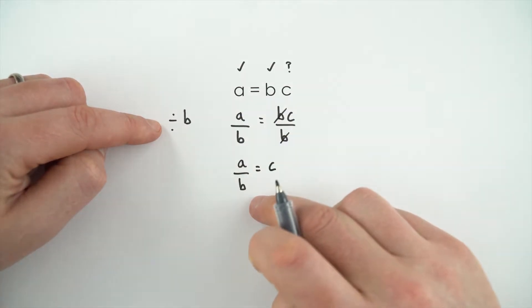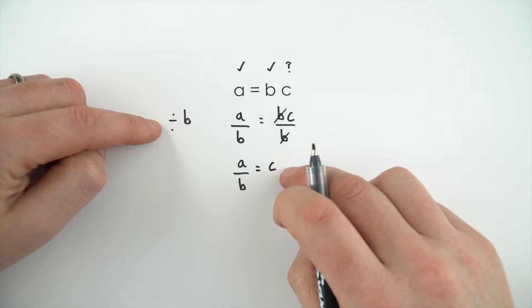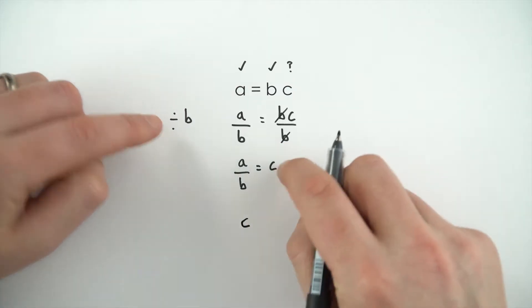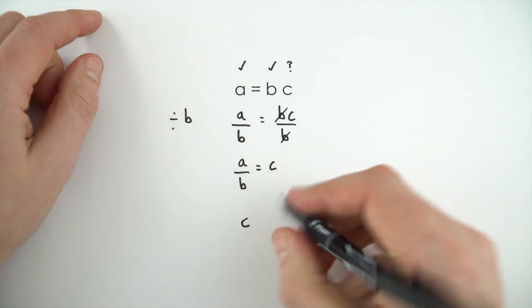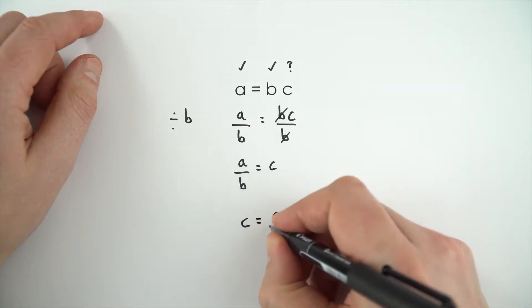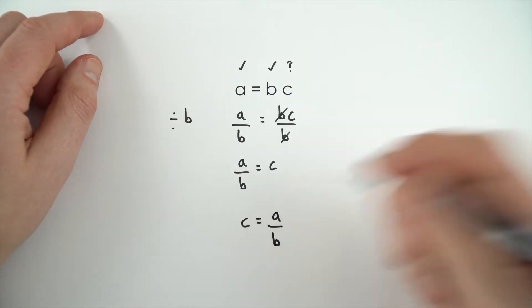So we've rearranged the equation, but we haven't quite finished making c the subject. By convention, we write the subject on the left, so we can just swap the two sides over to say that c is equal to a divided by b, and that's all there is to it.